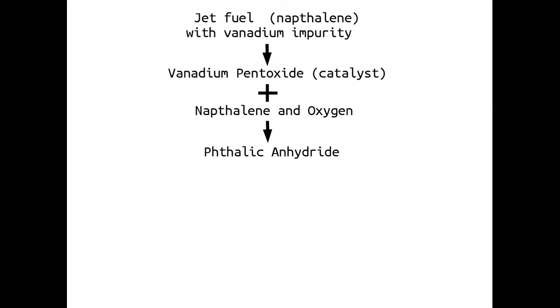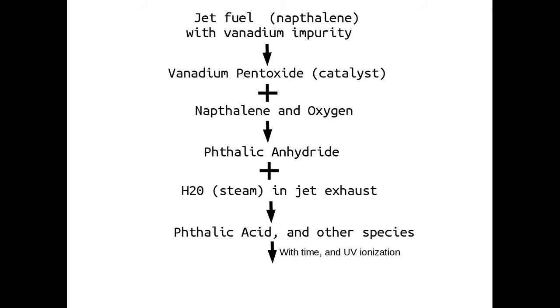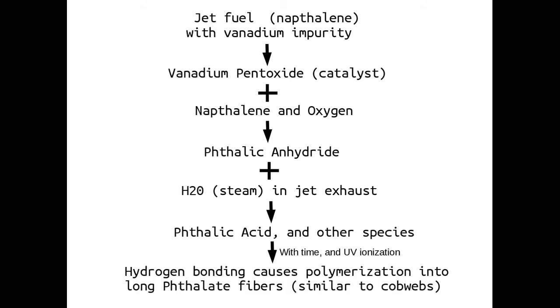You add that to water or steam in the jet exhaust and the hydrolysis produces phthalic acid and other phthalates and some benzene ring compounds. With time and ultraviolet ionization, hydrogen bonding causes polymerization into long phthalate fibers which resemble cobwebs and then fall to the earth.